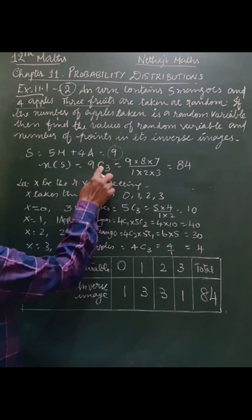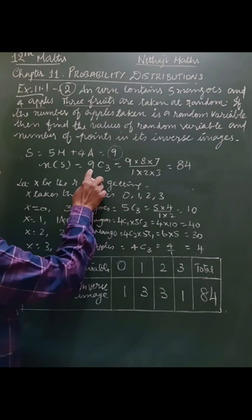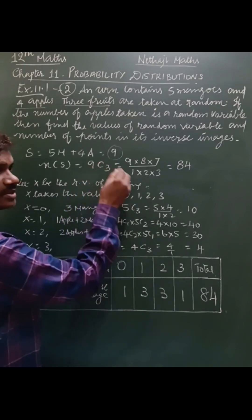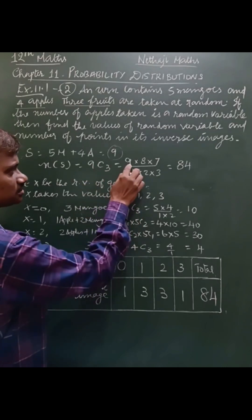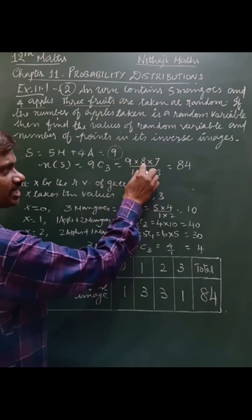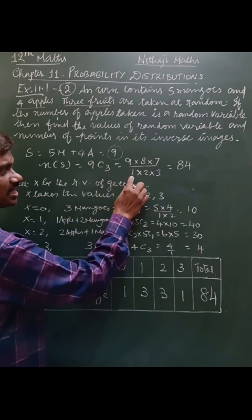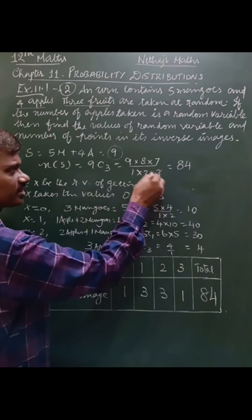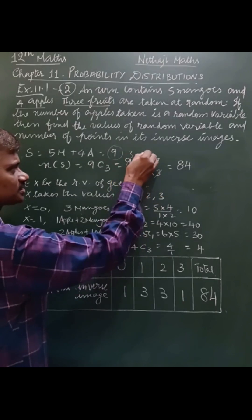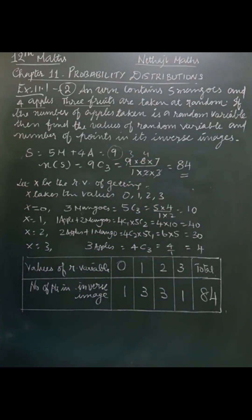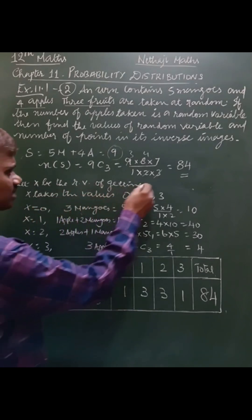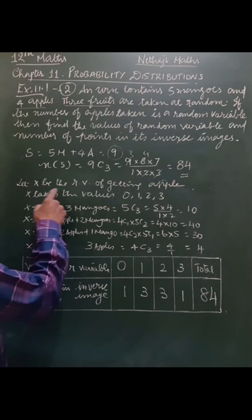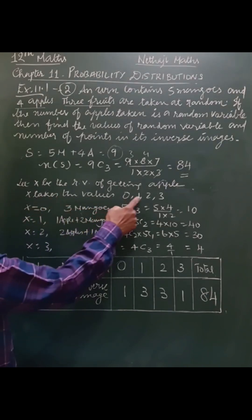So from 9 fruits I have to select 3. So 9C3. Apple is the random variable, so x takes the values 0, 1, 2, 3.